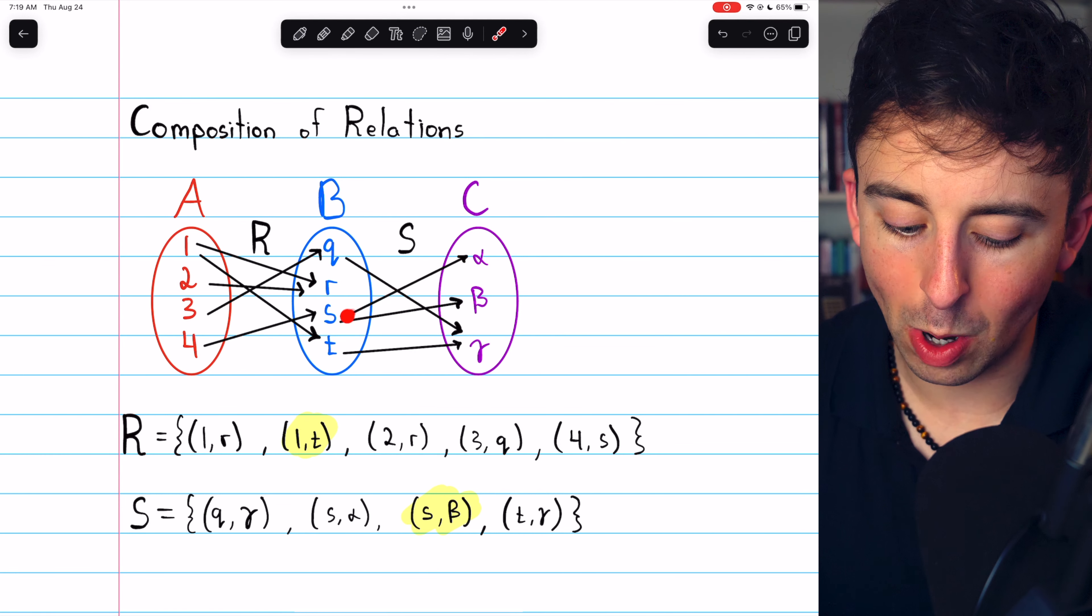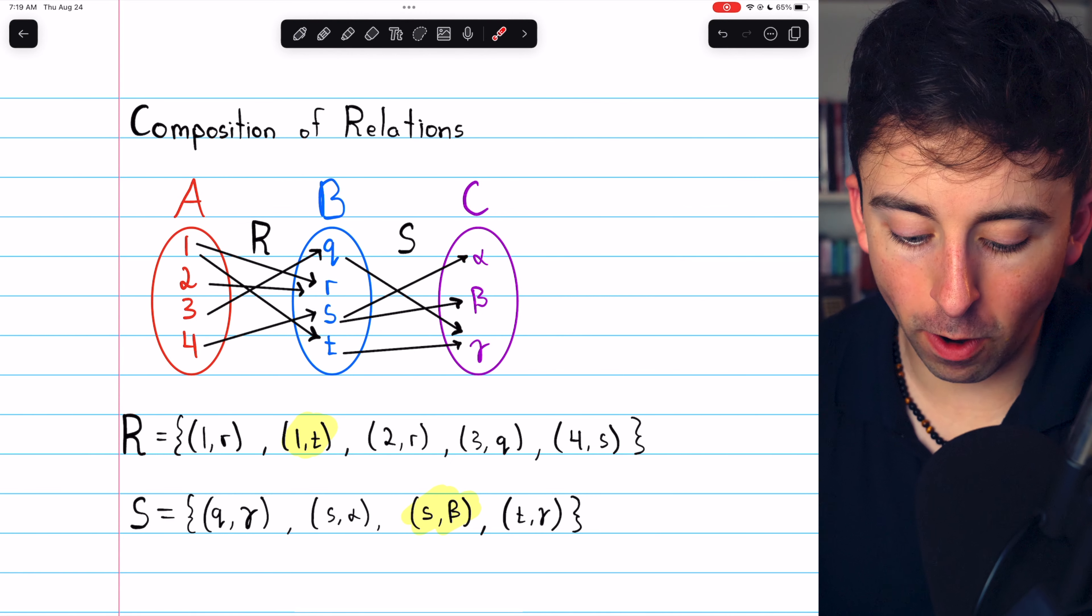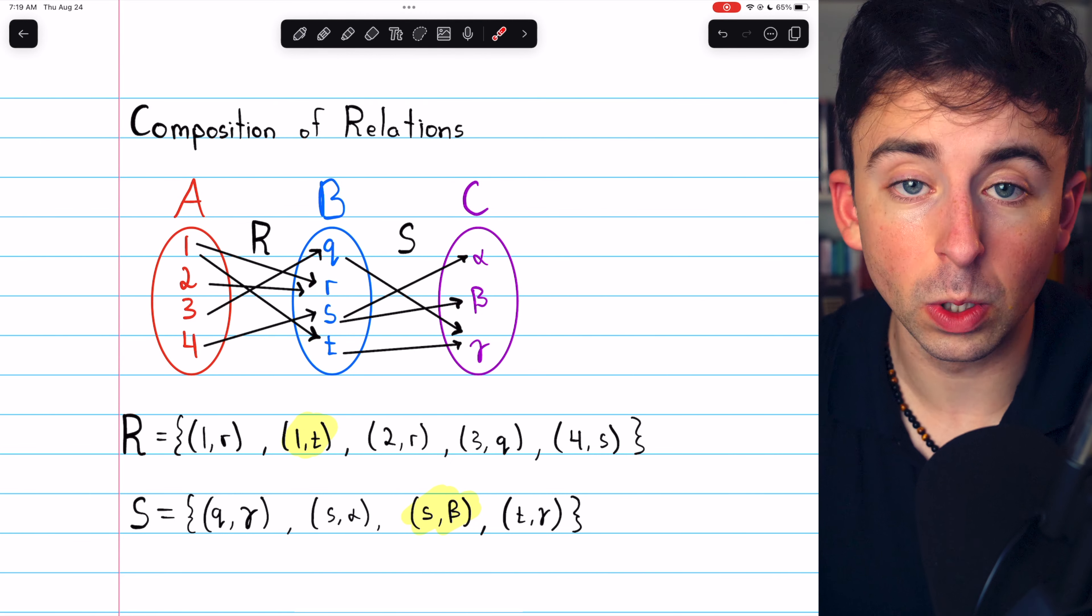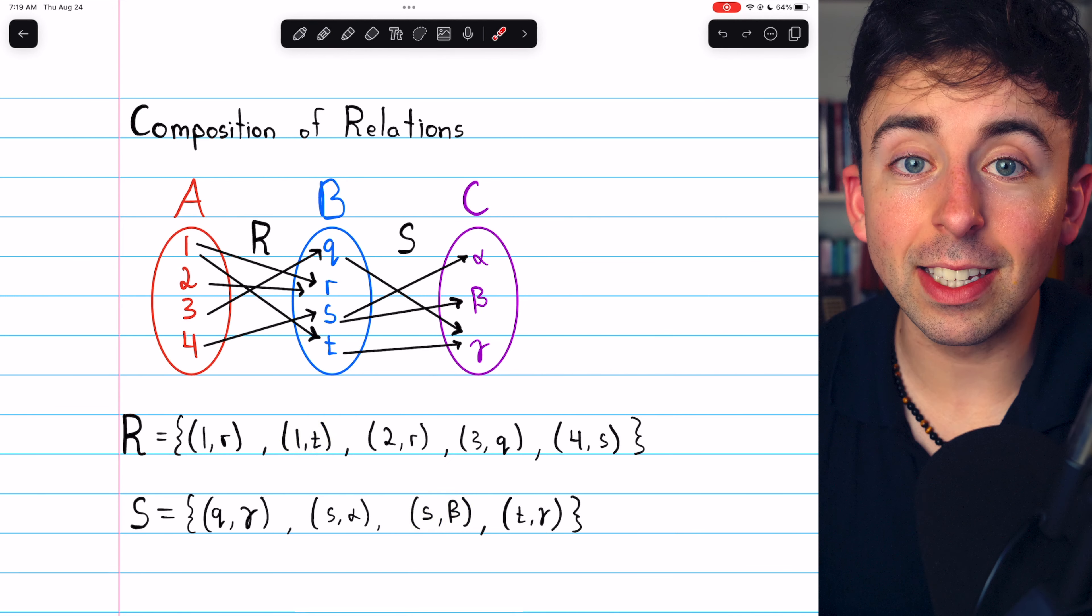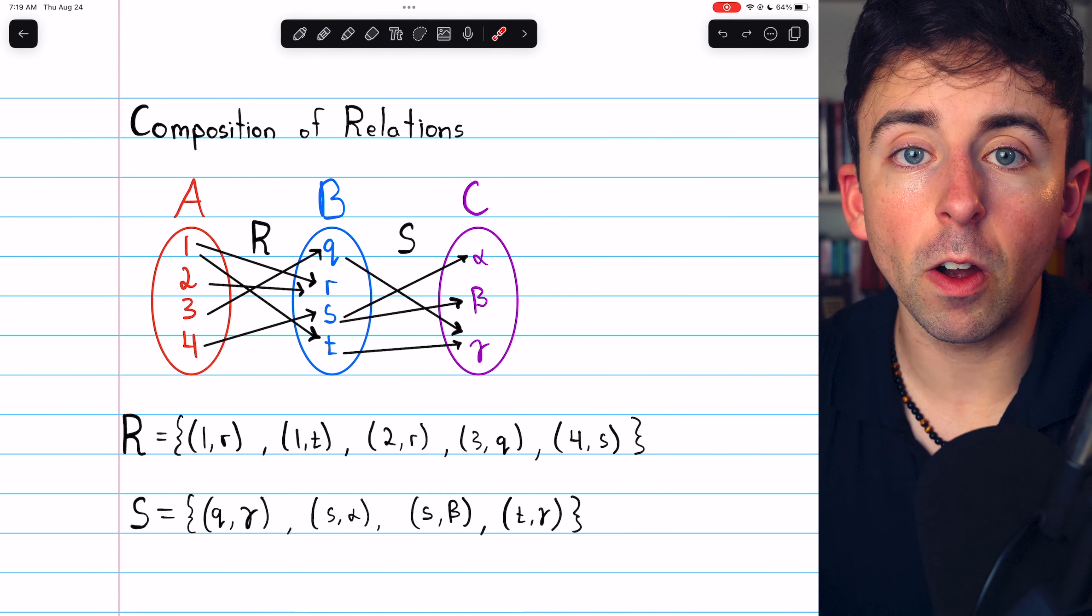S is also related to alpha, and in the relation R, we can see that one is also related to lowercase r. So hopefully the diagram and the set notation are both clear.